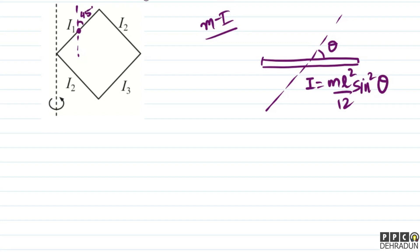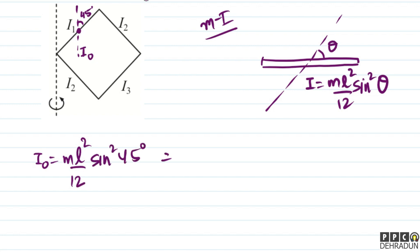तो अगर मैं moment of inertia की बात करूँ — इसे I₀ कह रहा हूँ — तो I₀ हमारा होगा ML²/12 × sin²45°। sin²45° = 1/2, तो यह हो जाएगा ML²/24।